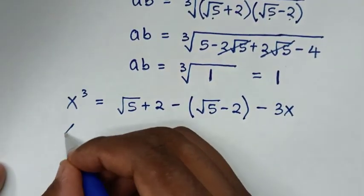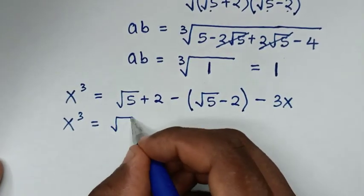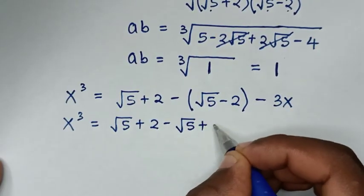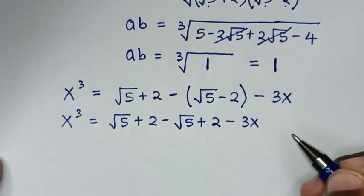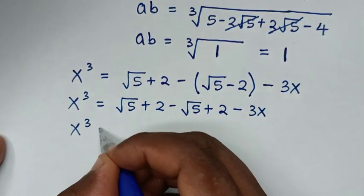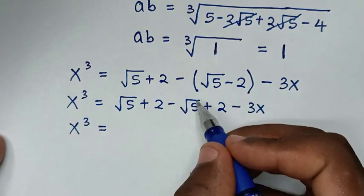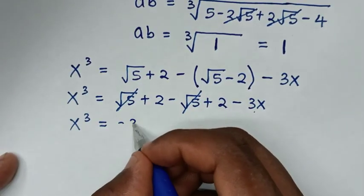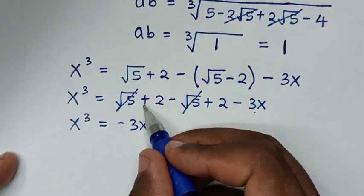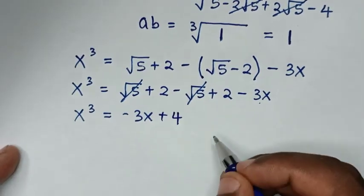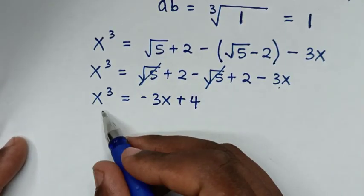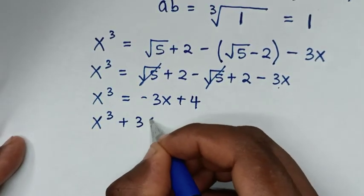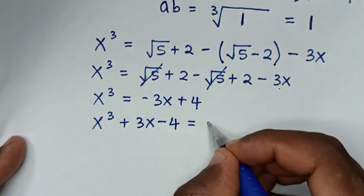So x cubed equals (square root of 5 plus 2) minus (square root of 5 minus 2) minus 3x. Opening the bracket: square root of 5 minus square root of 5 cancels to 0, and 2 plus 2 equals 4. So x cubed equals 4 minus 3x. Rearranging, we get x cubed plus 3x minus 4 equals 0.